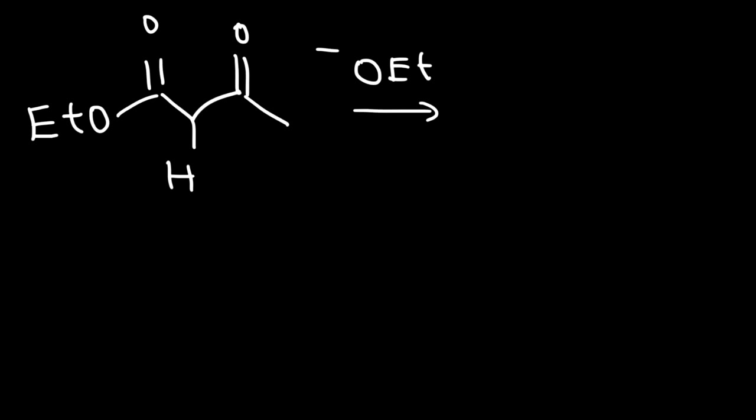If you saw the last video in my playlist, it was entitled the malonic ester synthesis reaction. The malonic ester is used to create carboxylic acids. This reaction — the acetoacetic ester synthesis reaction — is useful for making ketones instead of carboxylic acids. But the mechanisms for these processes are very similar.